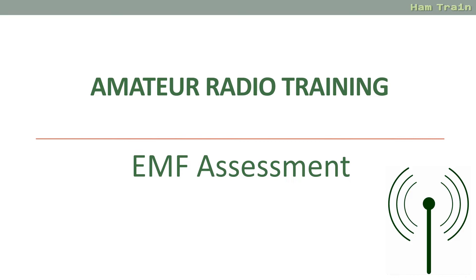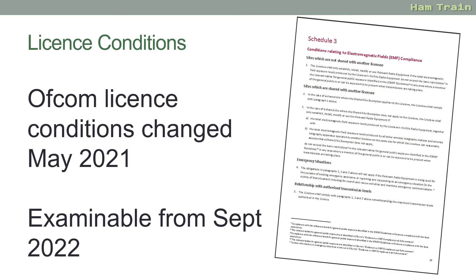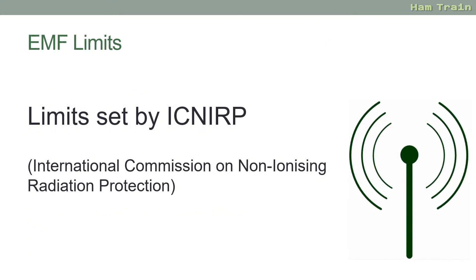First off, what are the rules regarding EMF? The amateur radio license conditions changed in May 2021 — a new section was added about the requirements to comply with EMF legislation. It's formed part of the license since May 2021 and examinable from September 2022. In essence, the rule is fairly straightforward: it's to make sure that your amateur radio transmissions do not exceed the limits set by the ICNIRP — the International Commission on Non-Ionizing Radiation Protection.